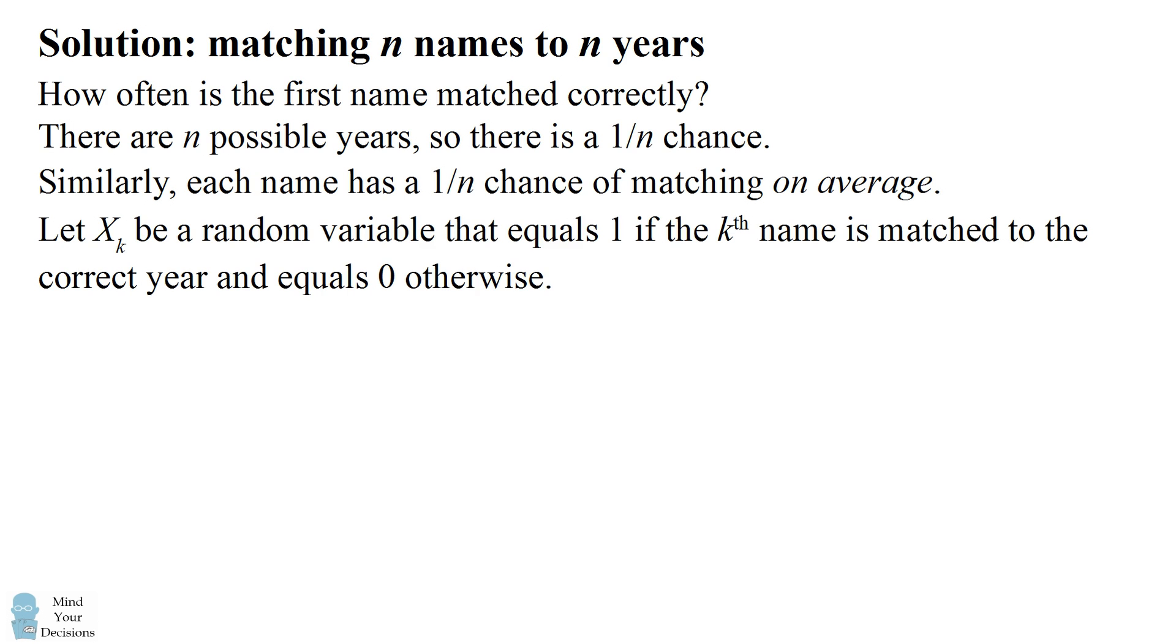Now what we'll do is we'll define a random variable X_k that equals 1 if the kth name is matched to the correct year and it equals 0 otherwise. So why are we doing this? Why are we making the problem seemingly more complicated? It's because we're going to use a property of random variables and the expectation operator. What we want to compute is the expected number of correct answers, which is the expectation of the sum of all these random variables.